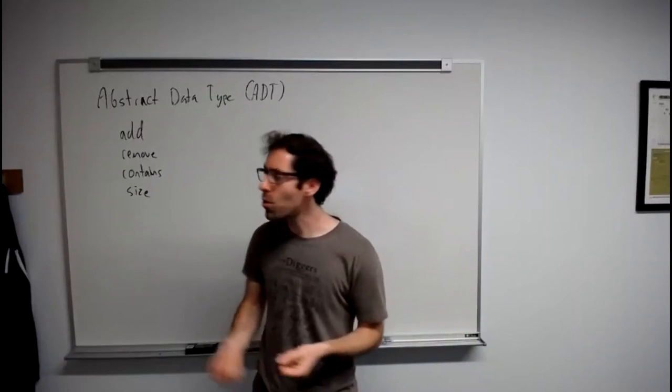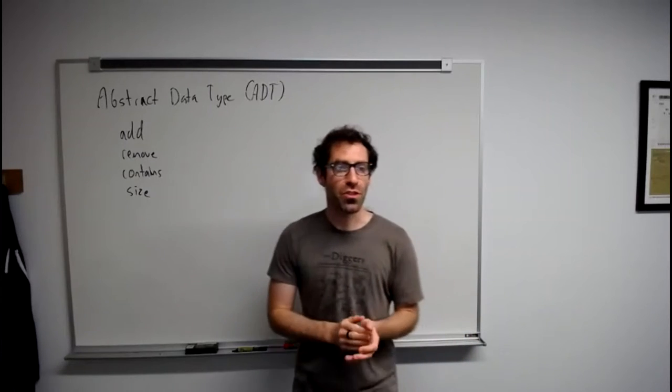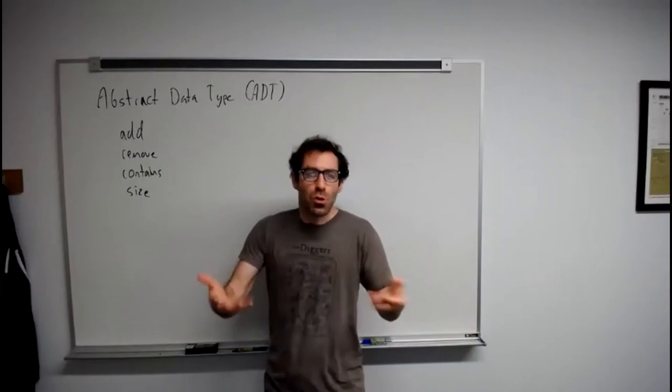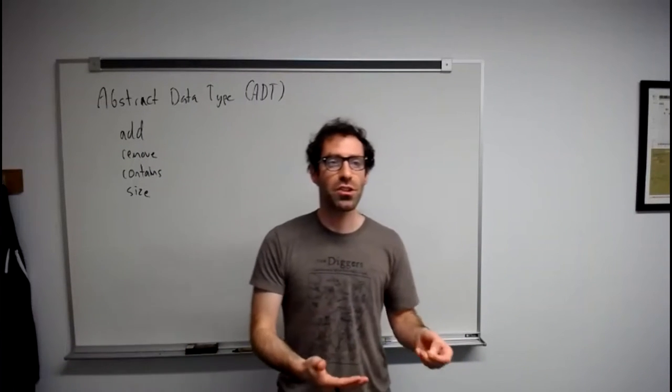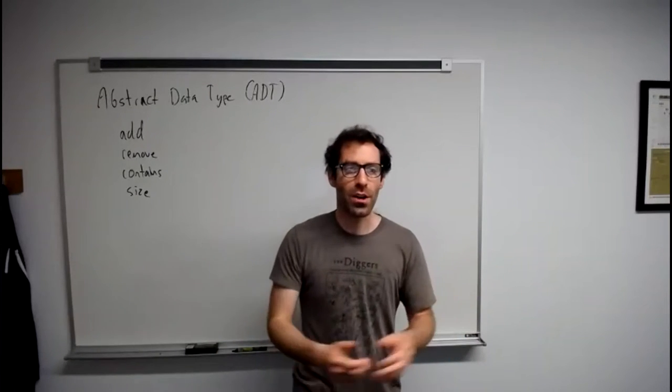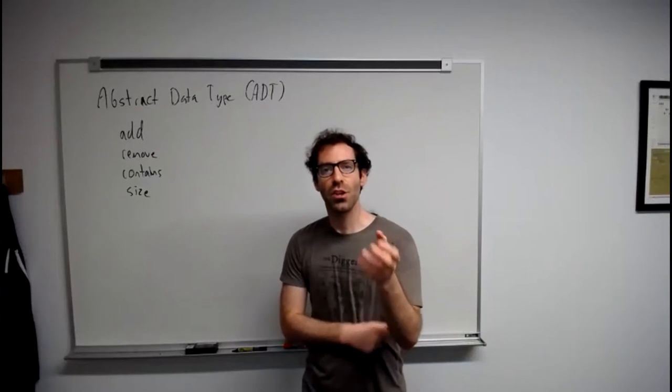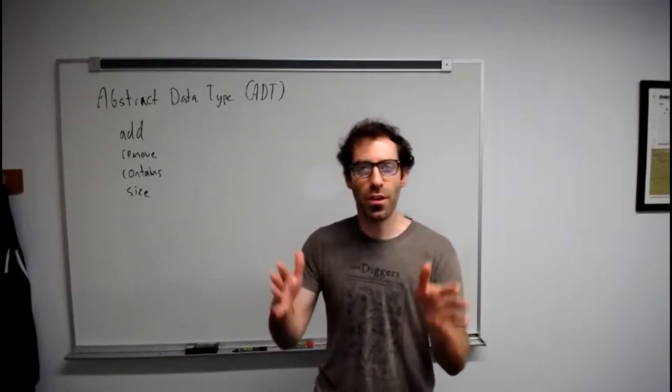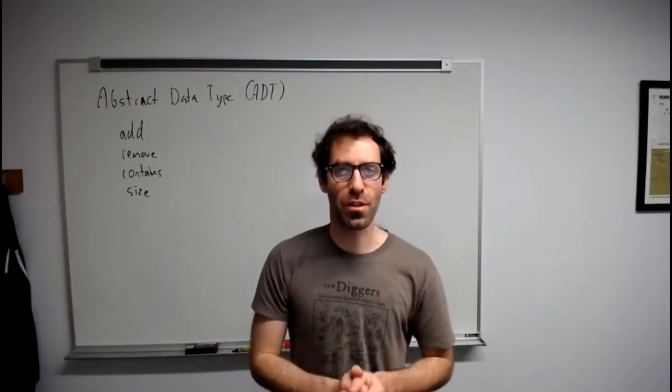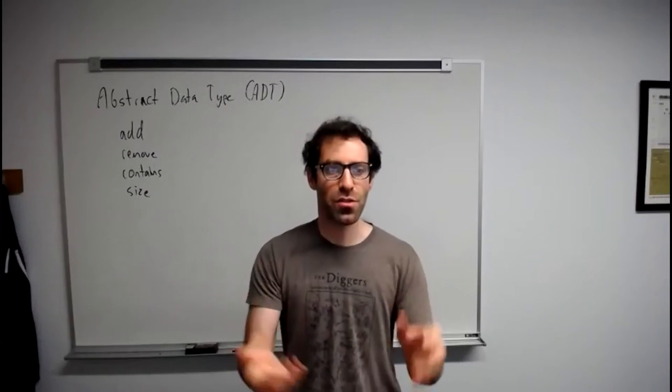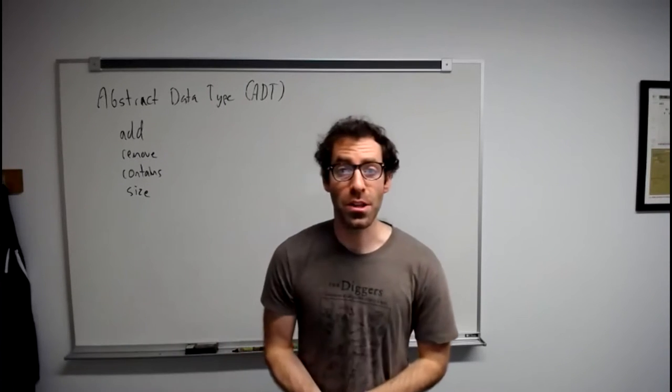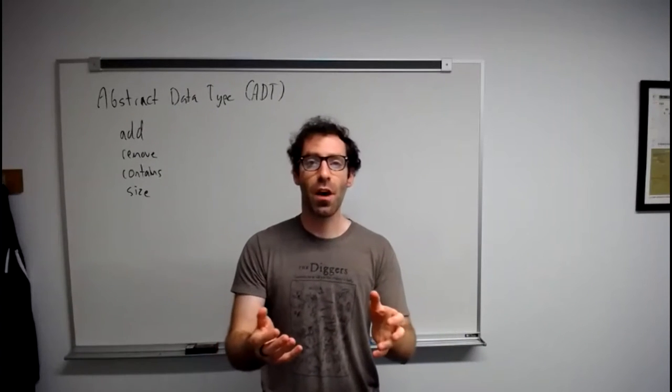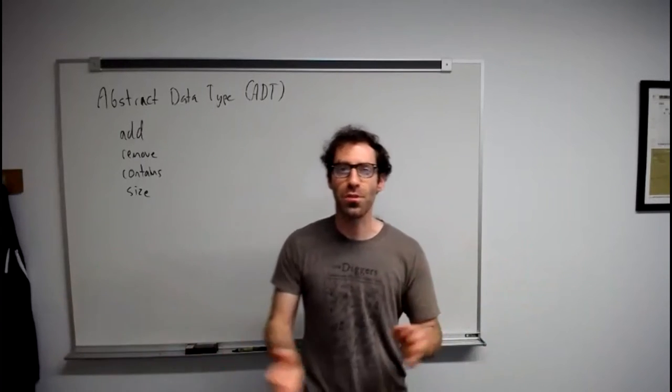Today we're going to look at two fundamental abstract data types in computer science called stacks and queues. These are so simple that they almost seem not worth studying. They're the programming equivalent of drawers and shelves - very simple, but we find uses for them everywhere. Stacks and queues are also useful to study because they provide an example of a minimal data structure with a very restricted set of operations.